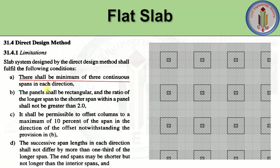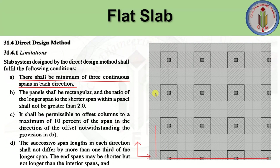The first condition is: there shall be a minimum of three continuous spans in each direction — both the x-direction and y-direction. In each direction, center-to-center distance counts as one span, so at least three spans in each direction are required. This is the first condition.